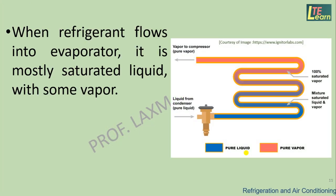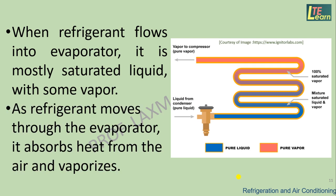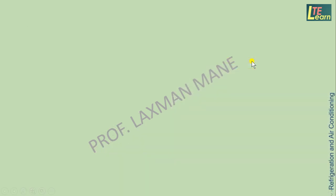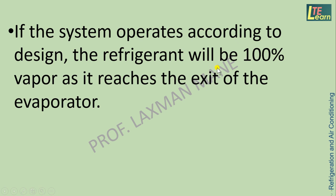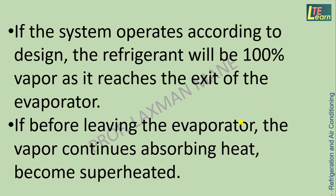When refrigerant flows into the evaporator, it is mostly saturated liquid with some vapor. As refrigerant moves through the evaporator, it absorbs heat from the air and vaporizes. If the system operates according to design, the refrigerant will be 100% vapor as it reaches the exit of the evaporator. If before leaving the evaporator the vapor continues absorbing heat, it becomes superheated.